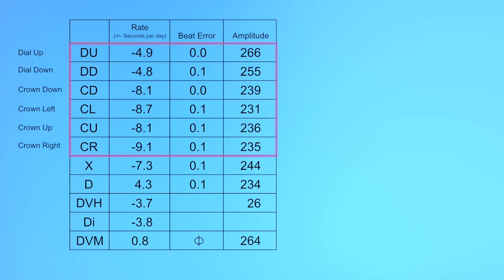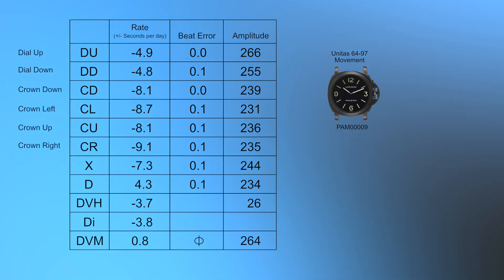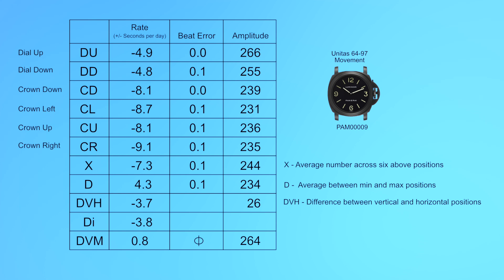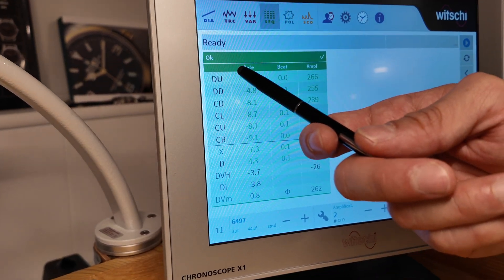Those are the six positional changes this mechanism rotates the movement through to determine the data. Getting an average of all positions produces the number X, which is the average across rate, beat error, and amplitude. The delta is the maximum range between the slowest number — in this case crown right — and the fastest, dial down. The delta of 4.3 is across all six positions.